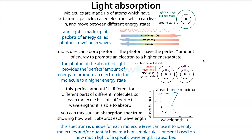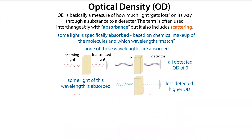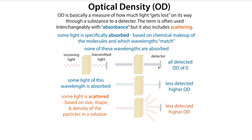The important thing to note is that the absorbance is going to be specific to the chemical makeup of the molecule. If you have light that matches that chemical makeup and you get that electron excited, some of that light is going to be absorbed, whereas other light that doesn't excite those electrons is not going to get absorbed — so you're going to get all of that light detected at your detector. What can also happen is that some of the light can be scattered. So instead of being specifically absorbed because it matches that electron layout, this light is actually just kind of bounced off and gets scattered.